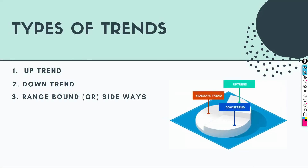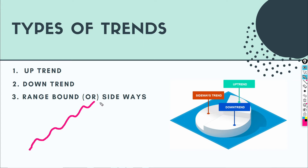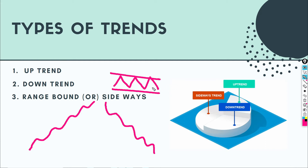There are three different types of trends. Any stock or asset can travel in three directions: the first is uptrend, the second is downtrend, and the third is rangebound. An uptrend is when the stock travels from low value to high value continuously, while a downtrend is when it travels from high value to low value continuously.